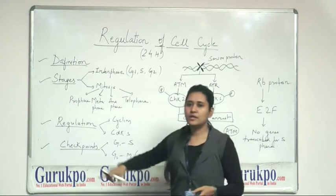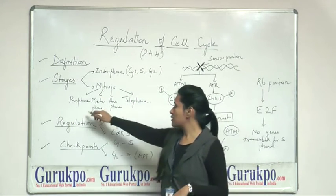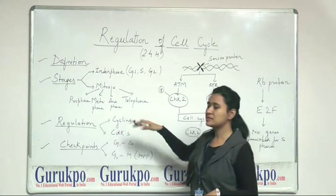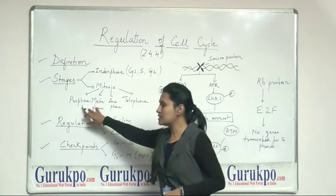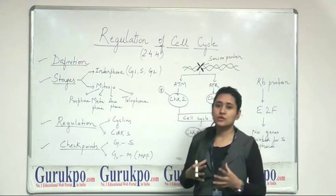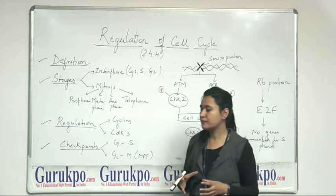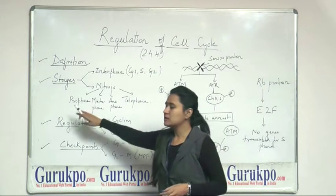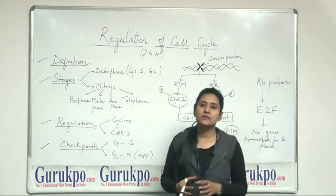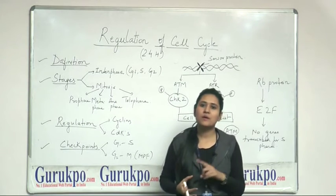Mitosis is divided into four sub-stages, prophase, metaphase, anaphase and telophase. In prophase, the chromatin or the chromosomes condense together to form a compact-like structure and the Golgi, ER, they will disintegrate and the nuclear membrane will disappear.